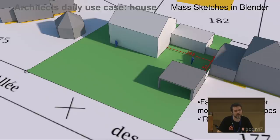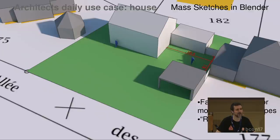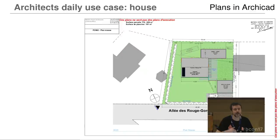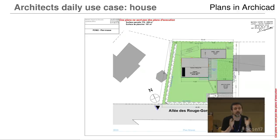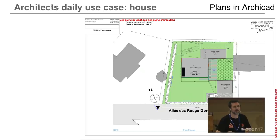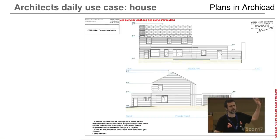Most architects I know prefer to use SketchUp for this type of work, but I find Blender more effective and faster to use. Then in the second part, I switch to Archicad — an architectural software that unfortunately doesn't run on Linux — to draw the plans, check quantities of floor and roofing, and make quotations. Those are things you cannot do in Blender. Then I switch back to Blender for the renderings.